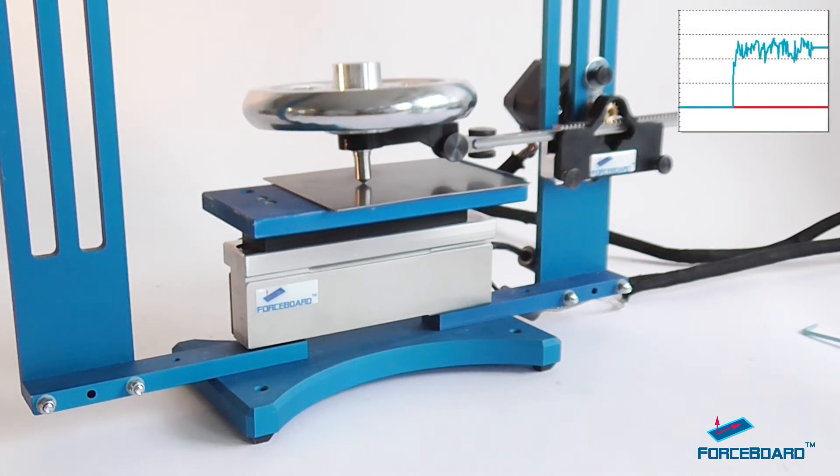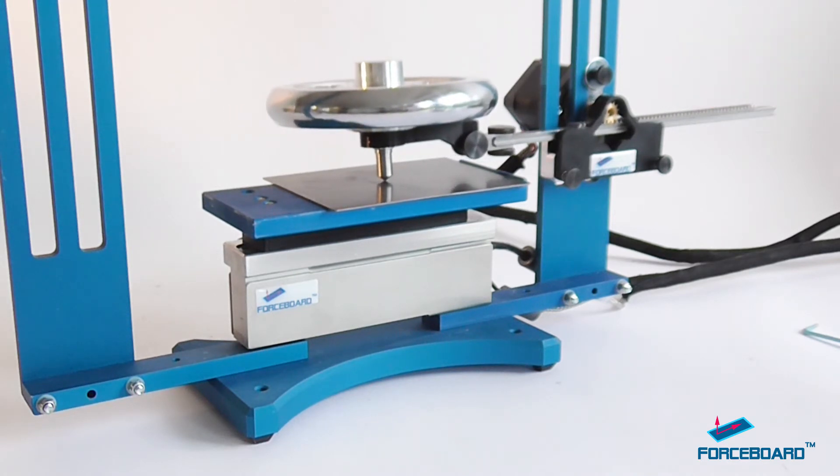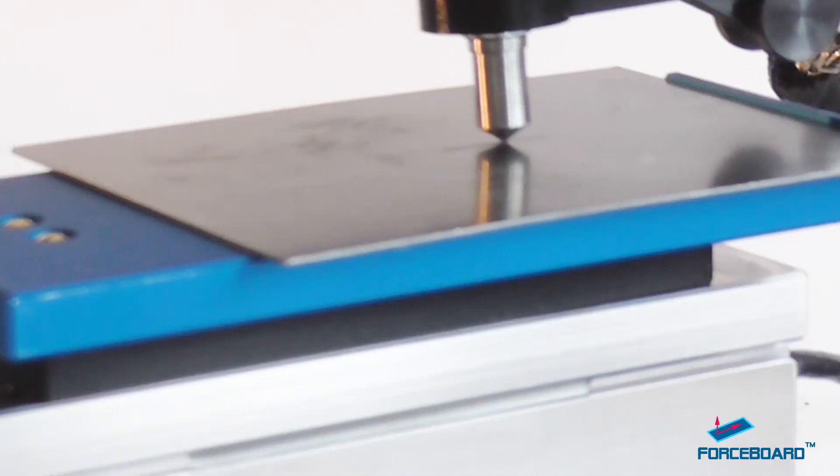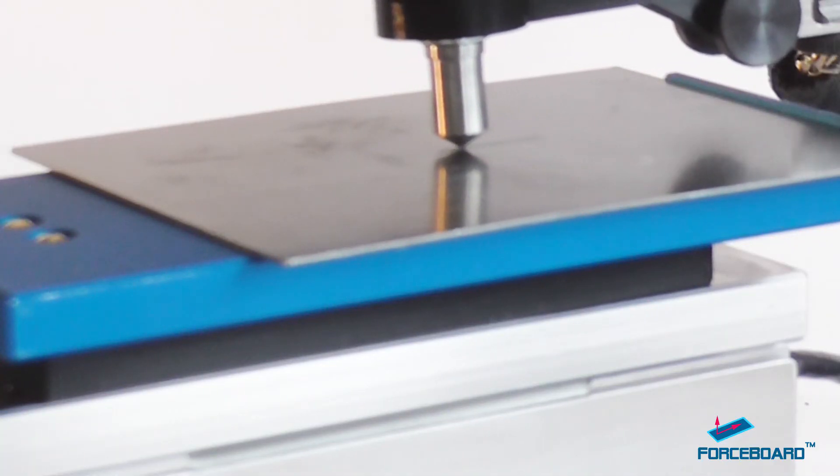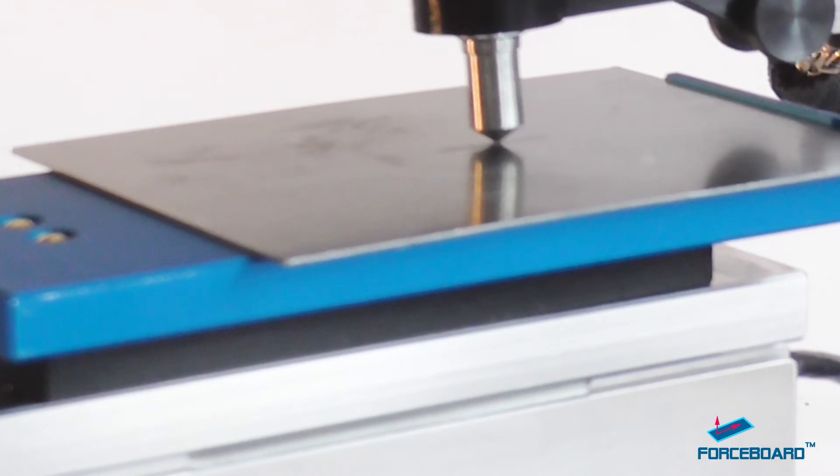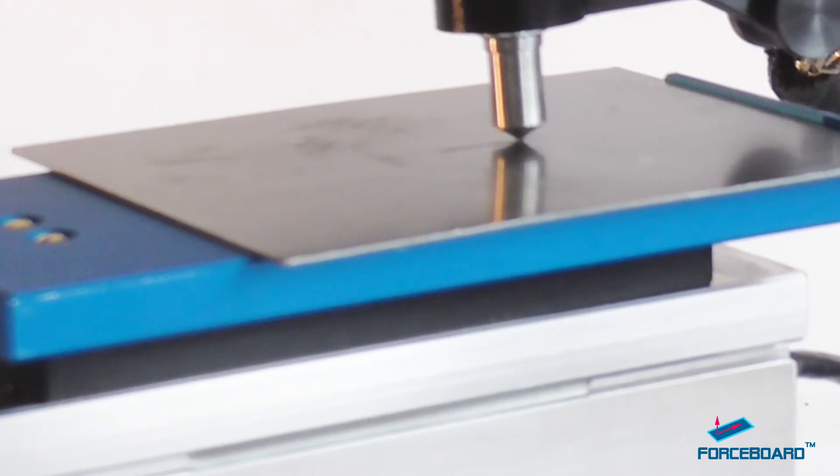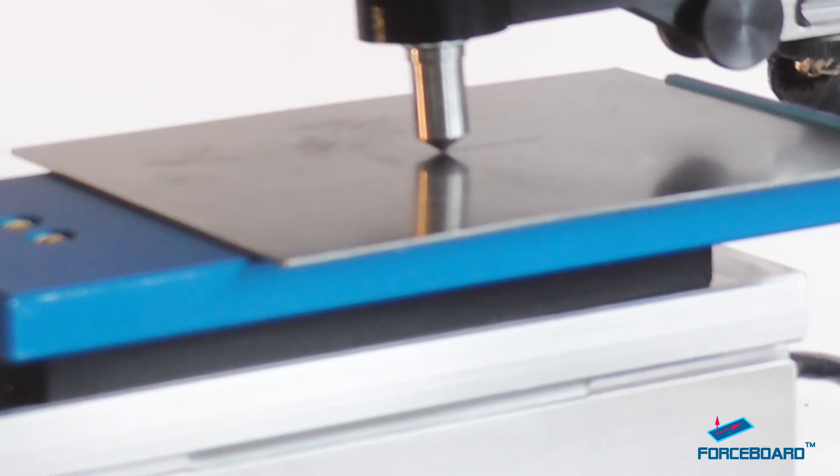We can also measure the coefficient of friction during this test. We can set up the software to move back and forth for any number of cycles, and then our scratch test really turns into a linear wear test.